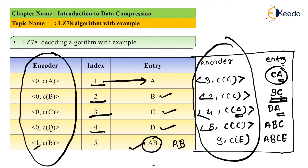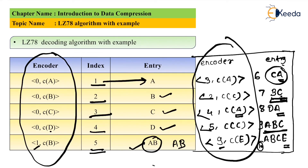After that, the given output is (5, C of C). C is the last character. At index 5 what is present? AB. So your complete entry will be ABC at index 9. The last entry of the encoded output is (9, C of E). As usual, write down the codeword E as the last character. With E, something is present at index 9. At index 9, what is present? ABC. So write down ABC with the last character E — giving ABCE as the new entry at index 10.